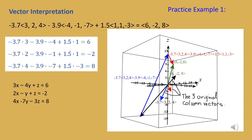The scalar negative 3.7 on the x column vector, negative 3.9 on the y column vector, and 1.5 on the z column vector form the solution. Taking negative 3.7 times 3, subtracting 3.9 times negative 4, and adding 1.5 times 1 gives 6. Negative 3.7 times 2, minus 3.9 times negative 1, plus 1.5 times 1 equals negative 2. Negative 3.7 times 4, minus 3.9 times negative 7, plus 1.5 times negative 3 equals 8. We are creating a linear combination of column vectors using those scalars.